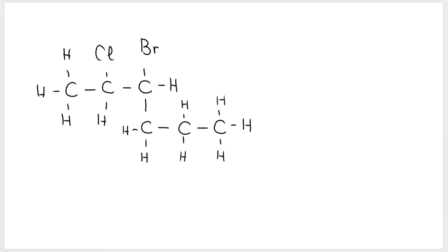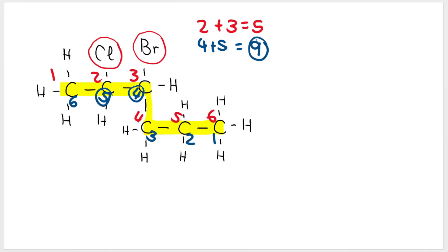What about this one? We need to look for the longest chain. I see 1, 2, 3, 4, 5, 6. Remember, the longest chain can bend. What are my substituents? In this case, it's a Cl and a Br. If I number it this way, 1, 2, 3, 4, 5, 6, my branches are going to be on carbon 2 and carbon 3, which gives me 5. If I number backwards, my branches would be on carbon 4 and 5, which gives me a much higher number. So we'll go with the red numbering.